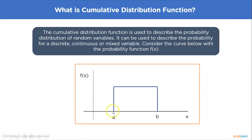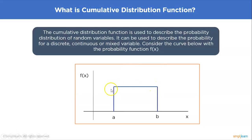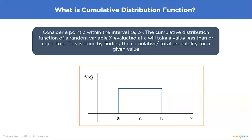Consider the curve shown in the figure. We're plotting a random variable x against its probability density function f(x). The graph is plotted between two variables a and b, and the probability density function is a constant line extending between these two points. The probability density function for the graph shown is nothing but the inverse of b minus a.